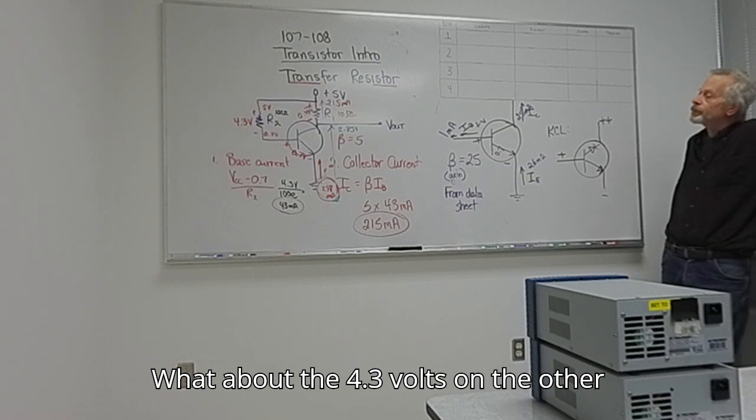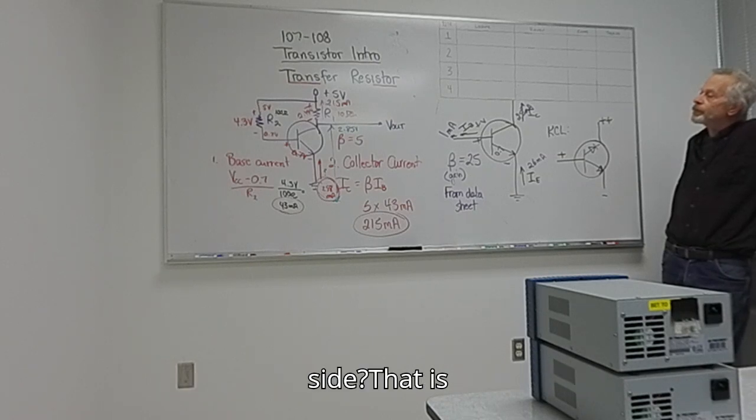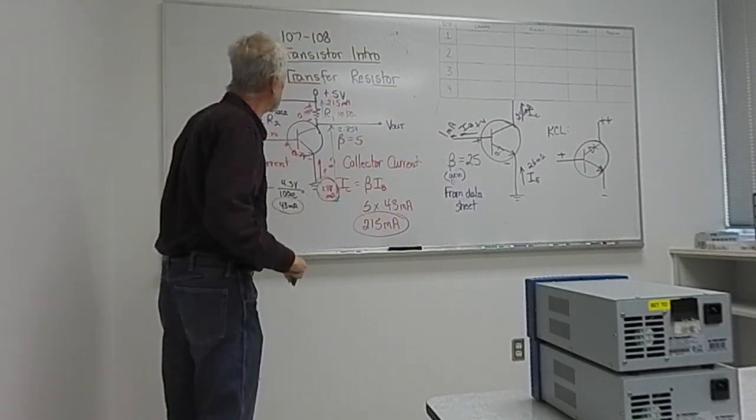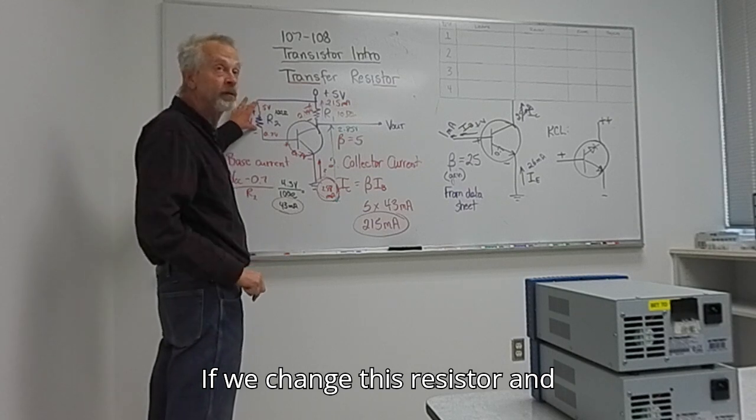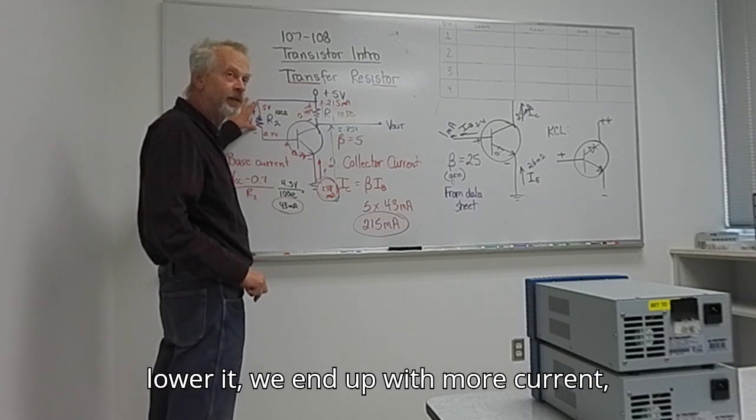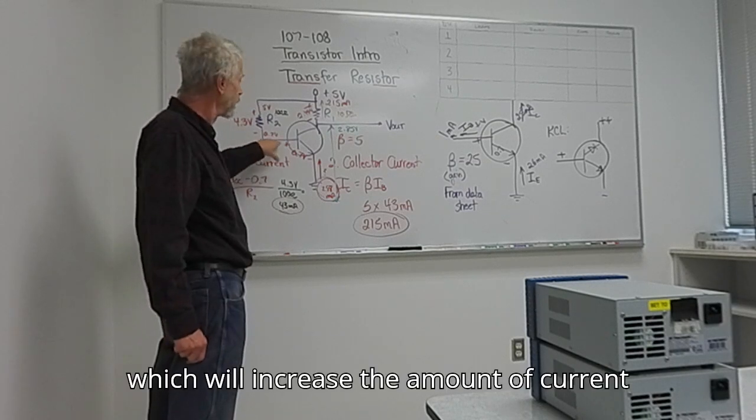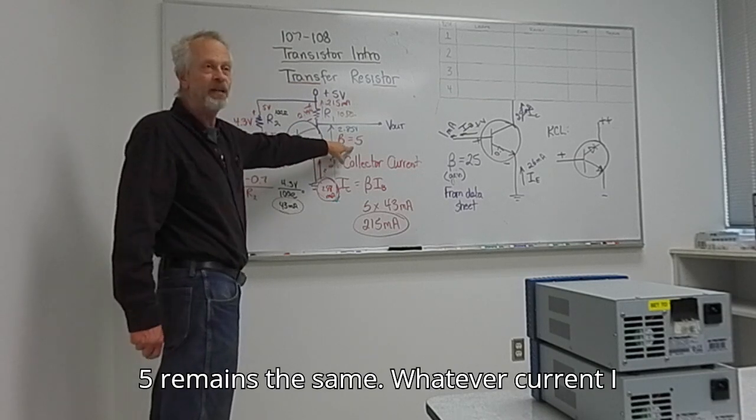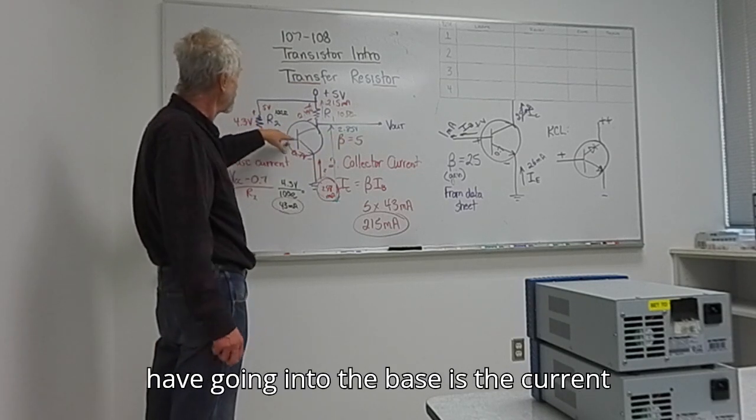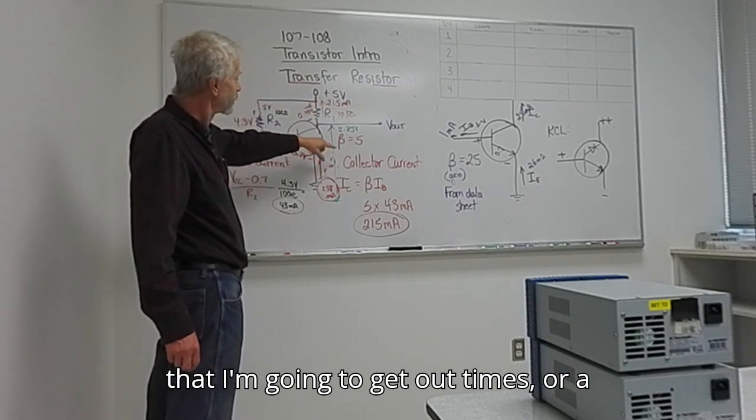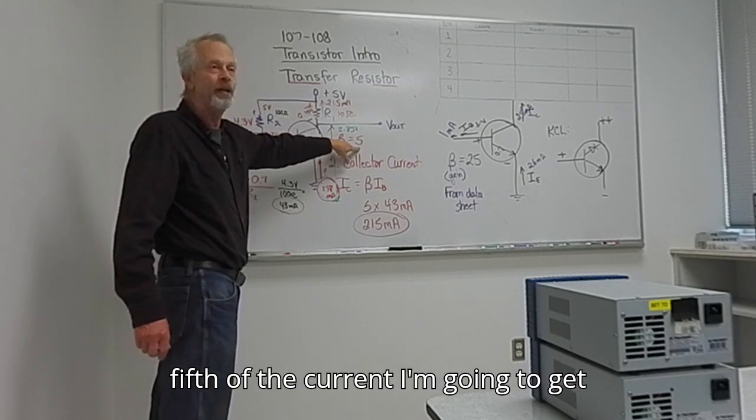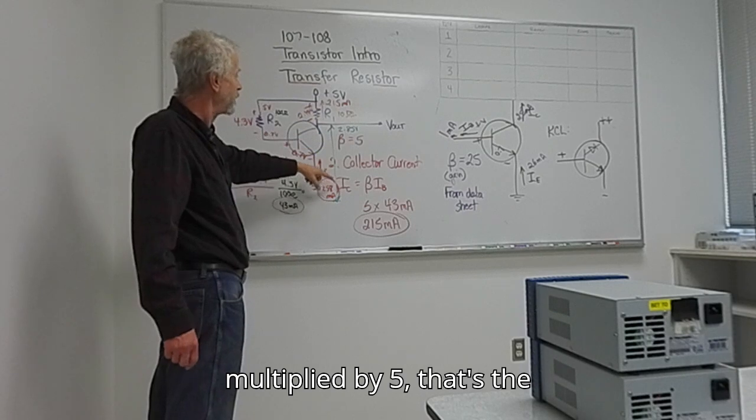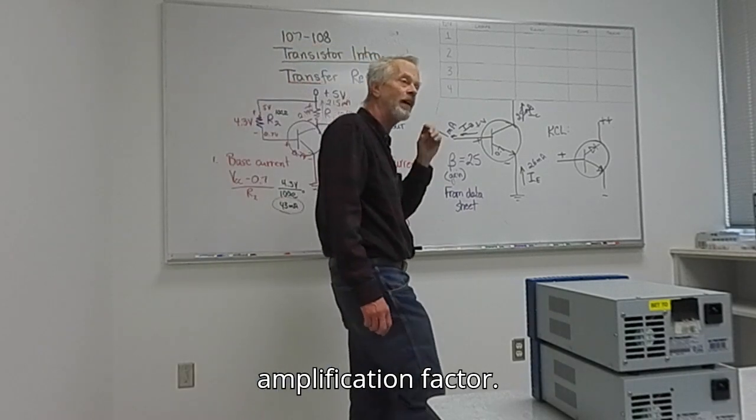What about the 4.3 volts on the other side? That is being used to control this. If we change this resistor and lower it, we end up with more current, which will increase the amount of current that we get here. Because beta of 5 remains the same. Whatever current I have going into the base is the current I'm going to get out times, or a fifth of the current I'm going to get out. So whatever we have coming in here is going to be multiplied by 5, that's the amplification factor.